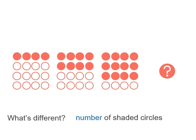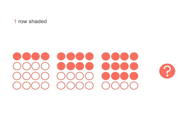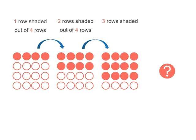What changes is the number of shaded circles. So if we were thinking of the pattern, there's 1 row out of 4 that's shaded. Then we've got 2 rows shaded out of our 4 rows. Then we've got 3 rows shaded out of 4 rows. So what would come next?